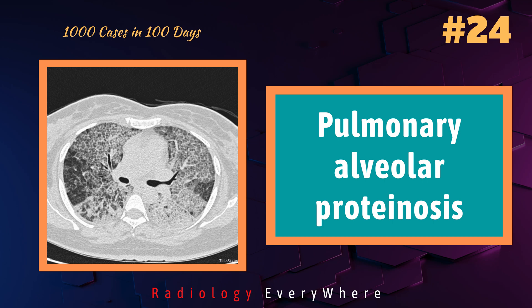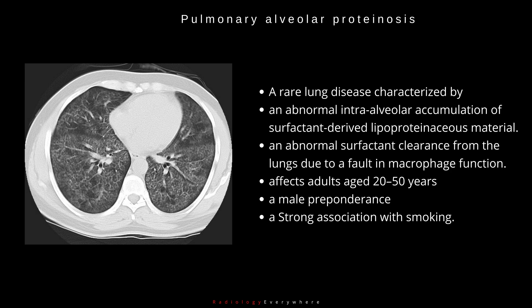In this video, we discuss pulmonary alveolar proteinosis. Pulmonary alveolar proteinosis is a rare lung disease characterized by an abnormal intra-alveolar accumulation of surfactant-derived lipoproteinaceous material. There is an abnormal surfactant clearance from the lungs due to a fault in macrophage function.